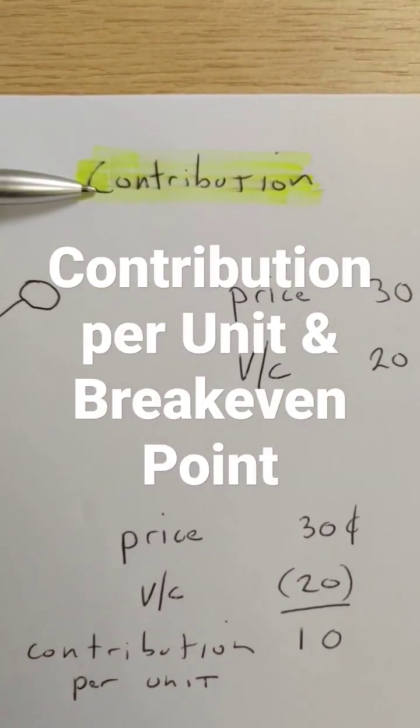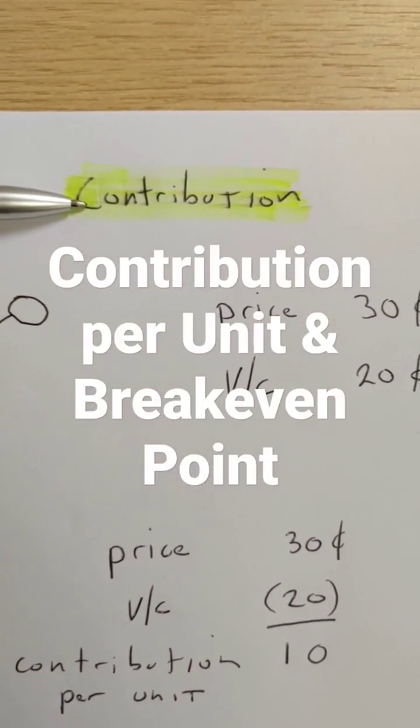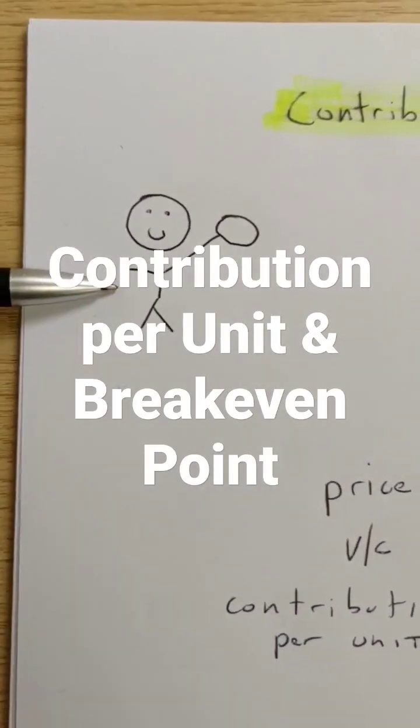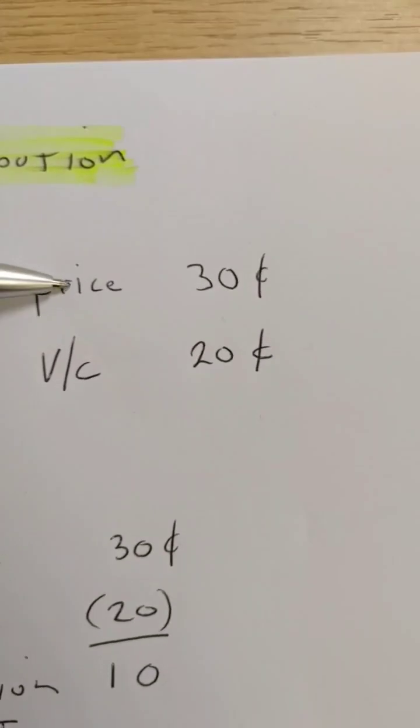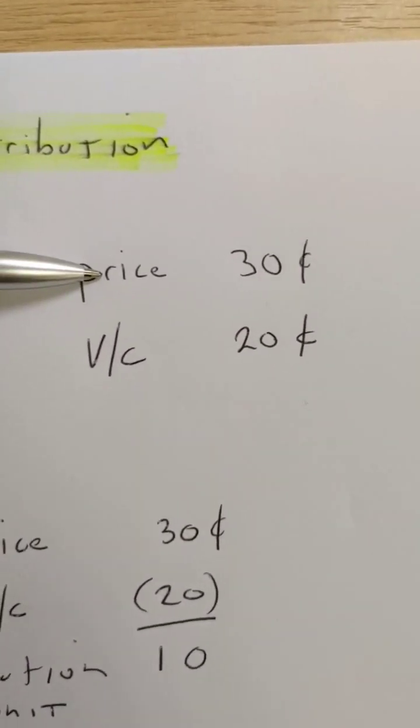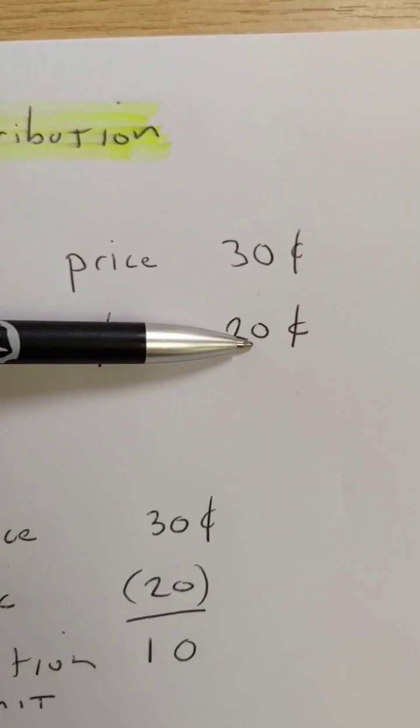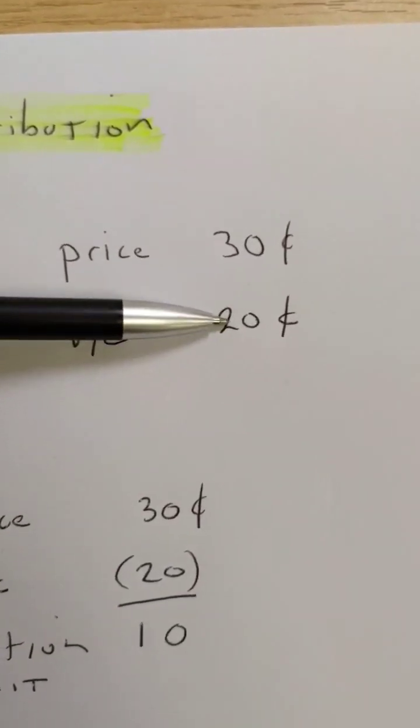Let's look at contribution per unit and break-even point. I have a business producing and selling doughnuts. My selling price is 30 cents, my variable costs are 20 cents per unit for eggs, flour,